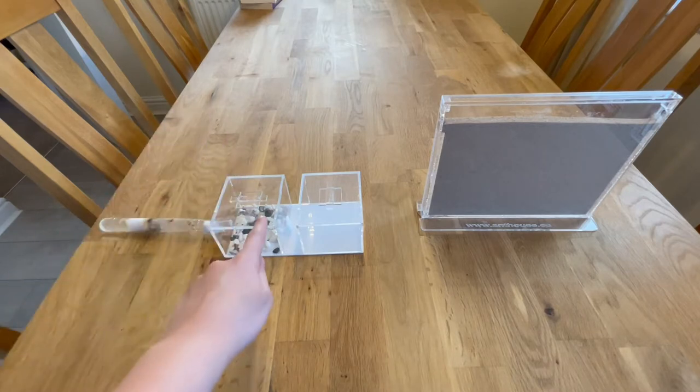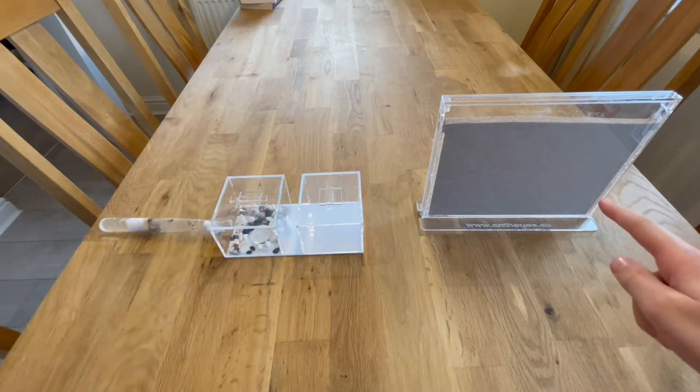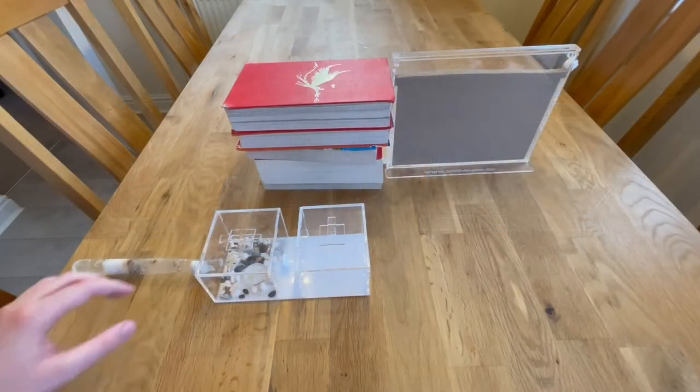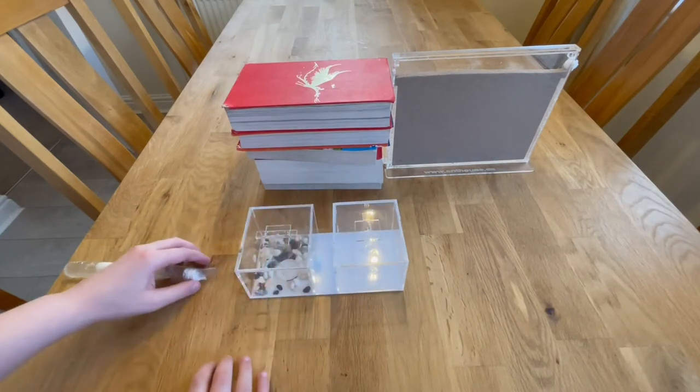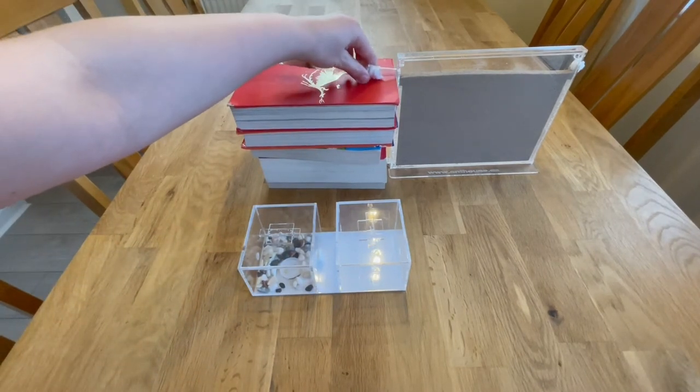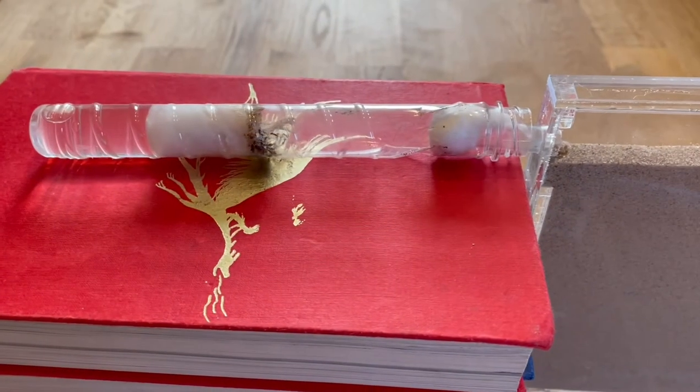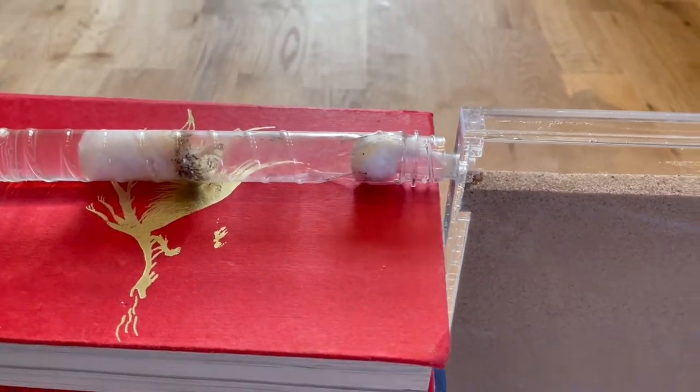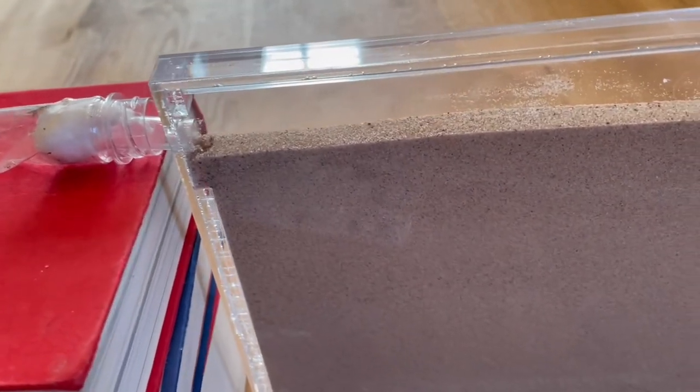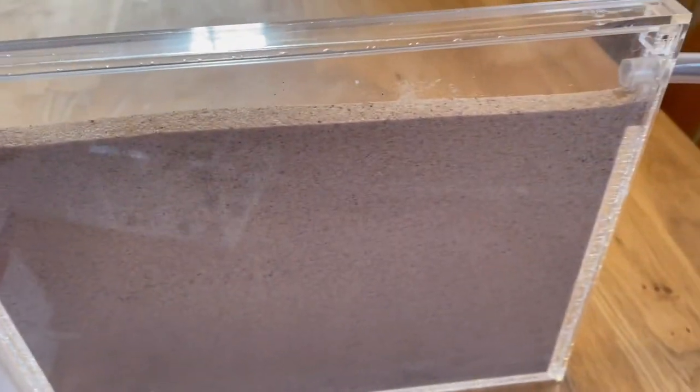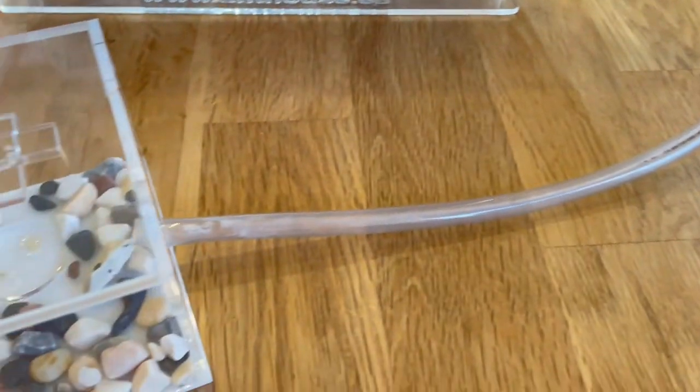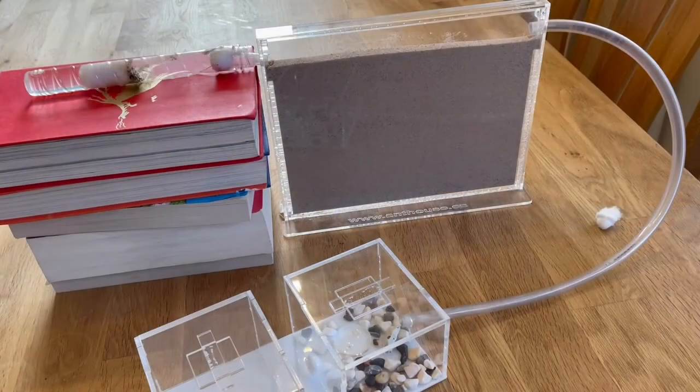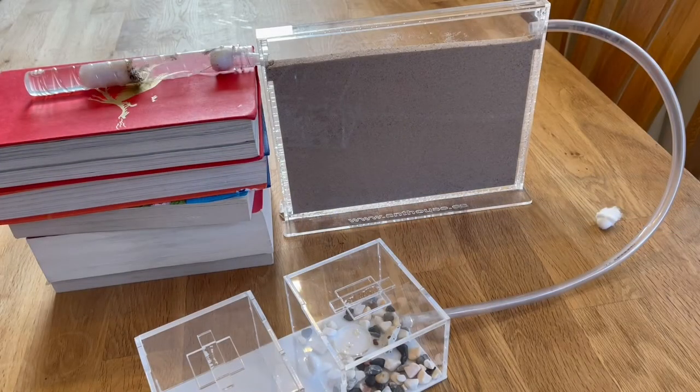I will be moving my ants from here to here. This is what the terrarium looks like. The ants will be digging here and if they come down this tube they will get their food here. This is the set up all together.